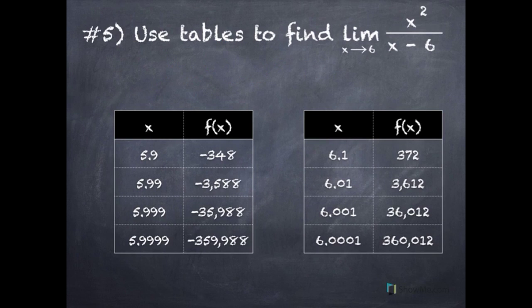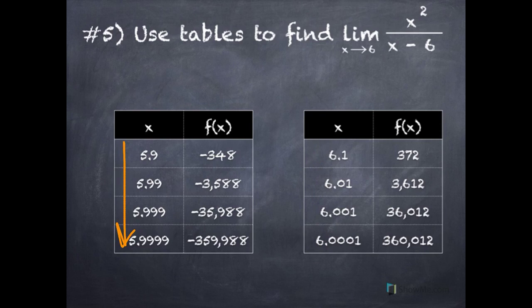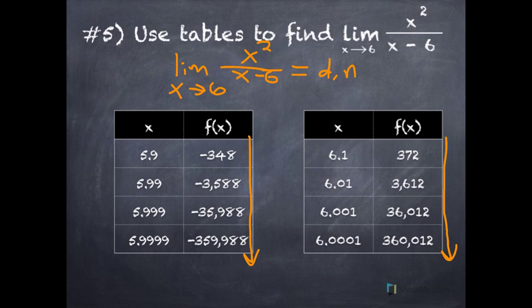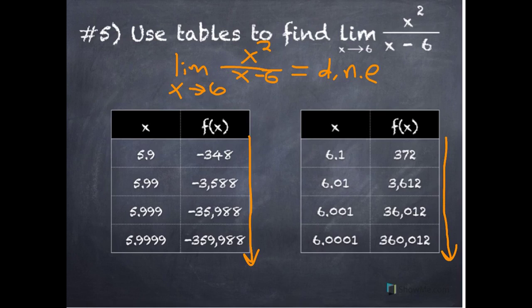Final example: find the limit of x² / (x − 6) as x approaches 6. Approaching 6 from the left and from the right — notice something different. The y values in the first table are getting hugely negative, while the y values in the other table are getting hugely positive. They are not approaching the same number. For a limit to exist, it must approach a single number from both the left and the right. So the limit of x² / (x − 6) as x approaches 6 does not exist.